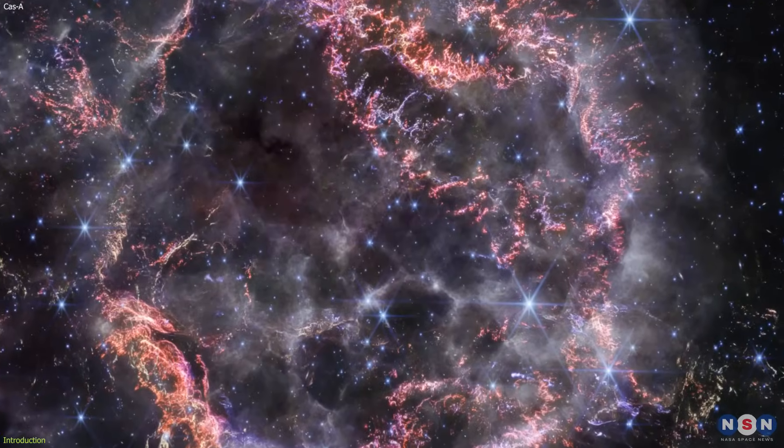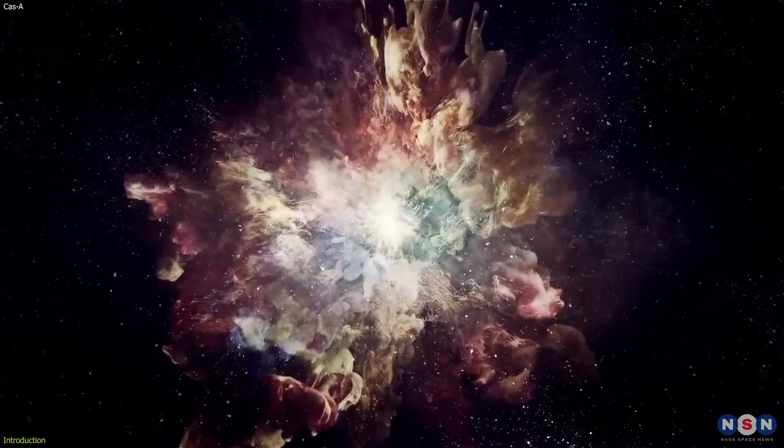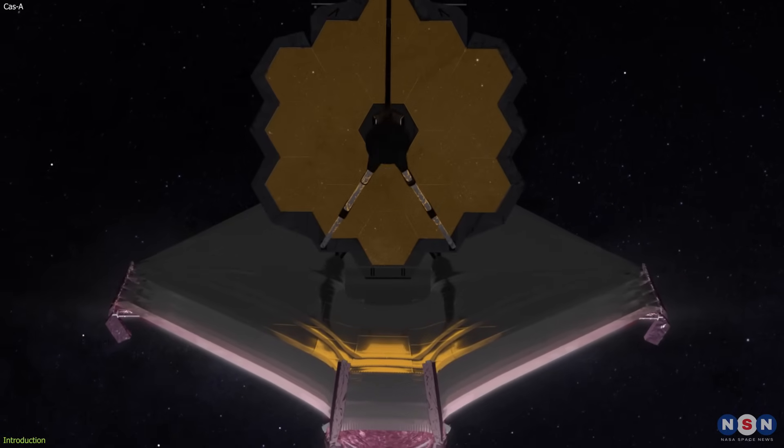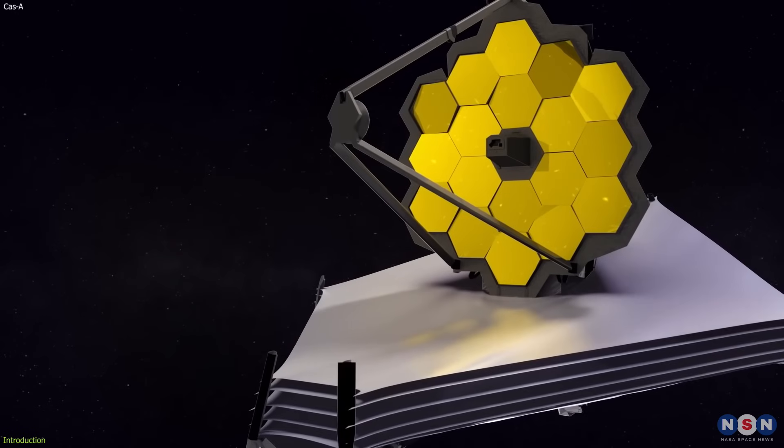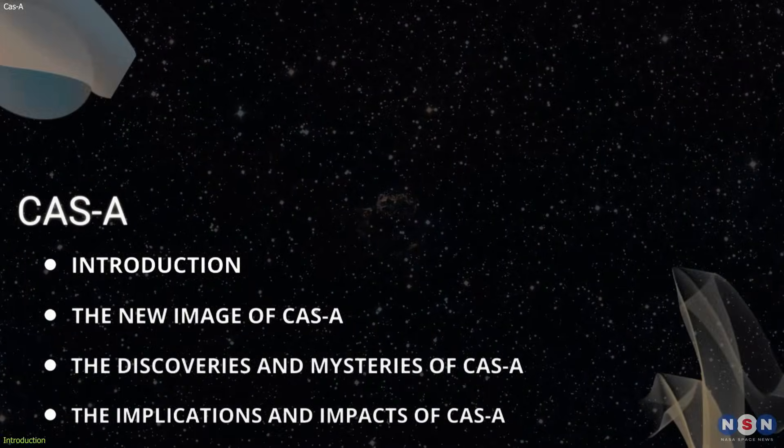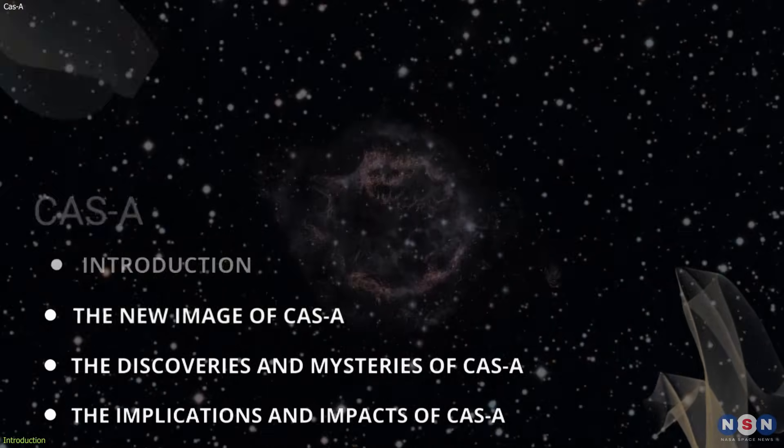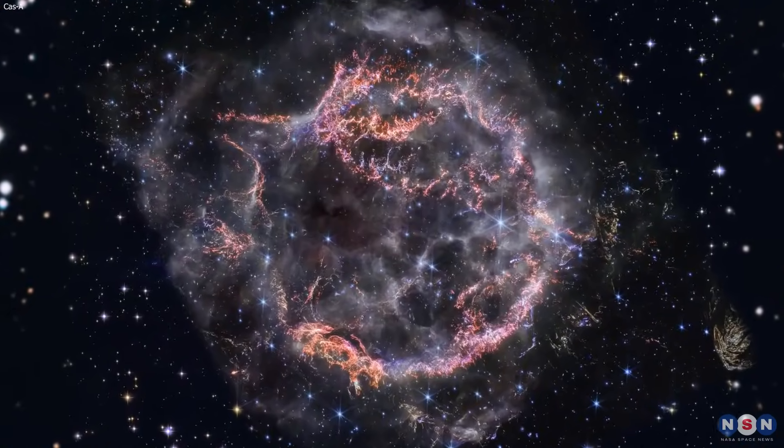But why is this image so important and exciting? What does it tell us about the star that exploded and the universe around it? How did the James Webb Telescope manage to take such a high-resolution image in infrared light? And what else can we expect from it in the future? In this video, we will answer these questions and more as we explore the new image of Cassiopeia A and the story behind it. So stay tuned and get ready to be amazed by the wonders of the cosmos.